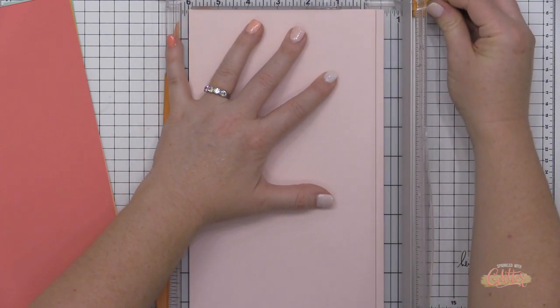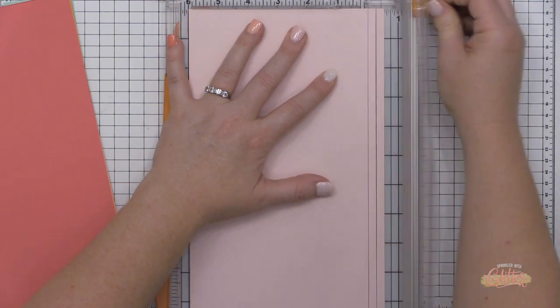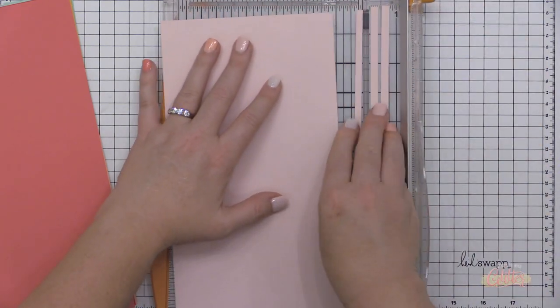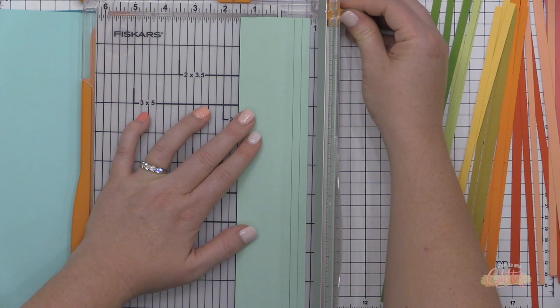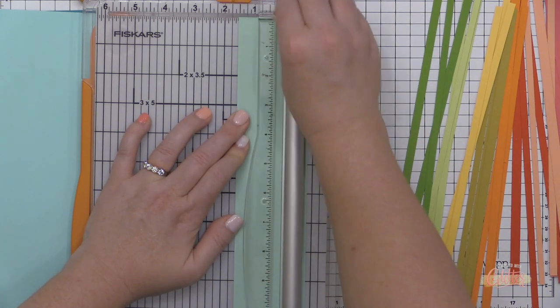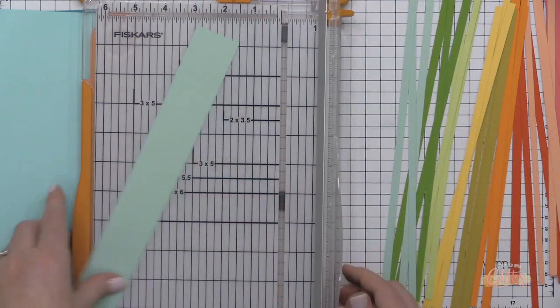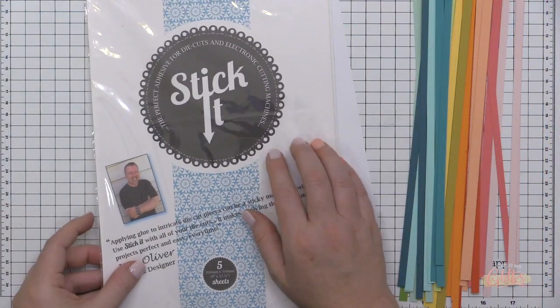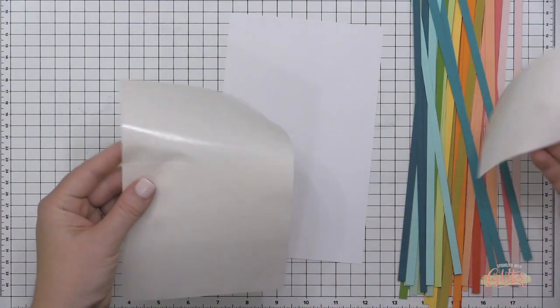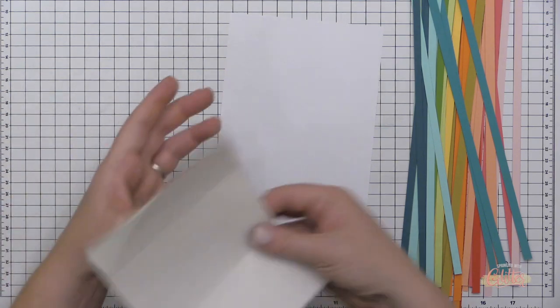Now I'm going to create this same exact stripe pattern, but this time I'm going to be using the Concord & Ninth cardstocks that coordinate with the Concord & Ninth inks that I just used to stamp my background. I'm placing these scraps of cardstock into my trimmer and I'm trimming them down to about a quarter of an inch.